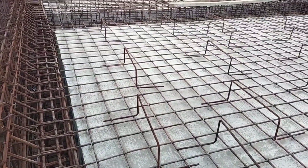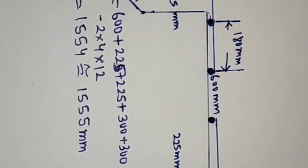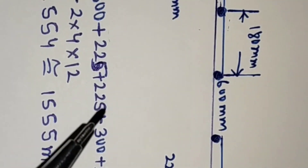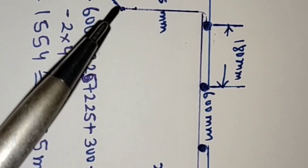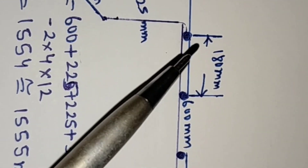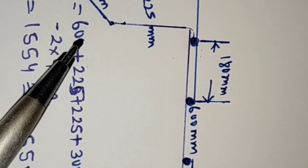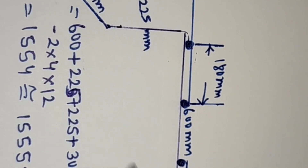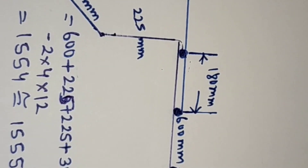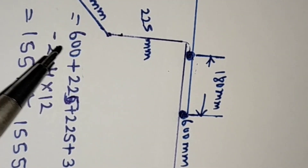I have shown you on the site how the chairs are arranged. Here you can see this is the leg length — 300 mm — and this is 180 mm center-to-center spacing. The total length is 600 mm plus 225 mm height, then 300 mm on this side and also 300 mm on this side.